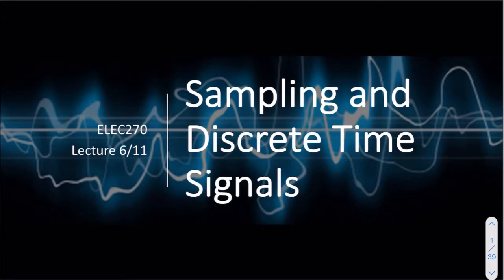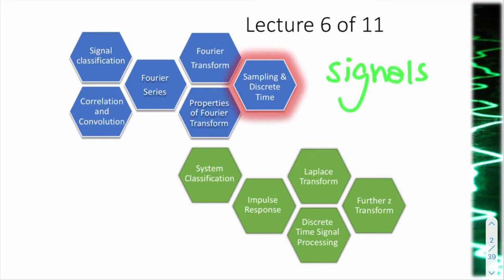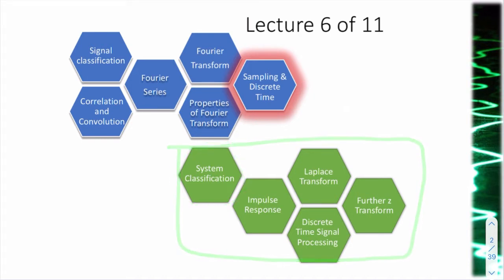This is Lecture 6, where we're going to look at sampling and discrete time signals. We're just over halfway through our set of 11 lectures, and this is the last lecture where we're going to talk about signals. From next week, we'll be talking about systems — the remaining five lectures are all about systems. Today we're covering sampling and the transition between continuous time and discrete time.